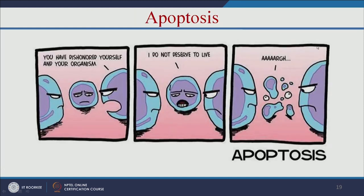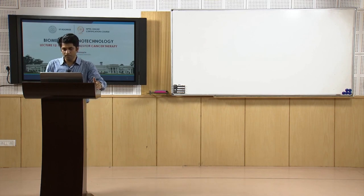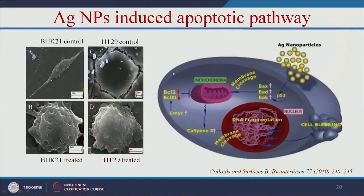When making nanoparticles or nanodrugs, they should induce apoptosis — programmed cell death. If the nanomaterial induces apoptosis, it is suitable for cancer therapy. For example, selenium nanoparticles induce an apoptotic pathway even at low concentration. Control cells are untreated and healthy, but when treated with selenium nanoparticles, the cells become rounded — these are apoptotic cells.